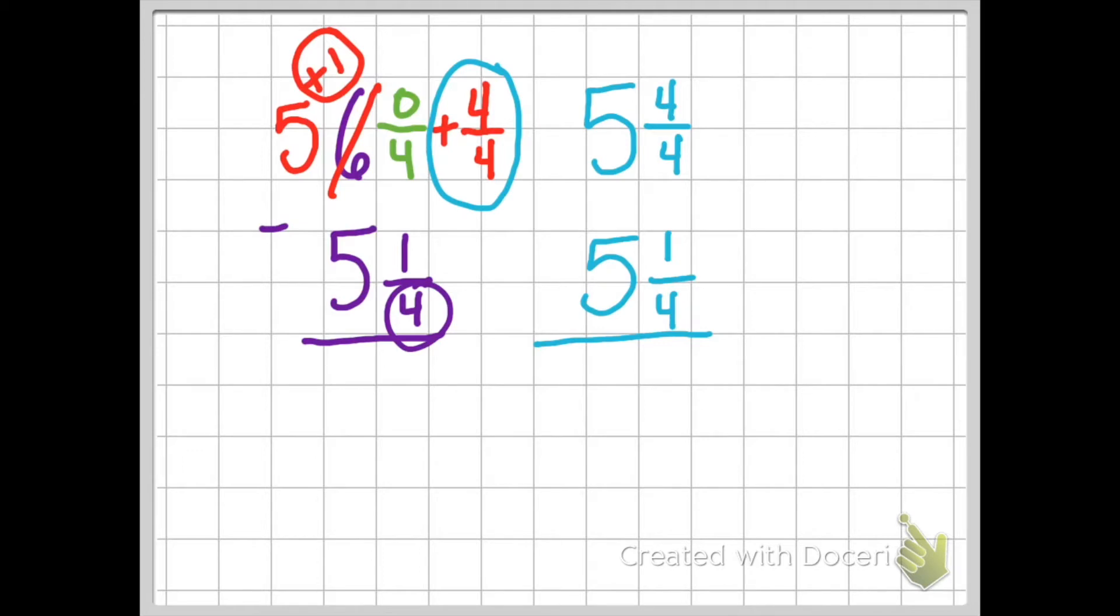Now that it's rewritten nice and neat, and I can easily see my two mixed numbers, I can go ahead and subtract. 4/4 minus 1/4 is 3/4, and 5 minus 5 is 0. So just like my visual model stated, my answer is 3/4.